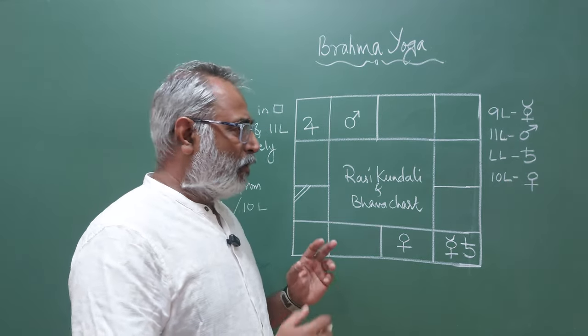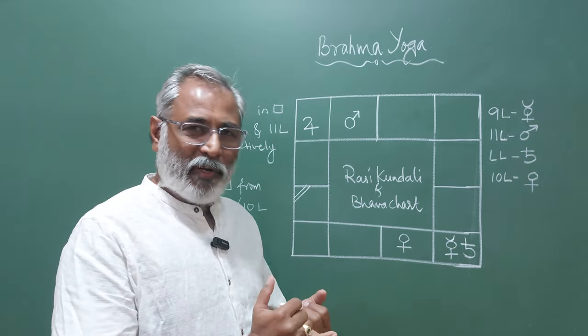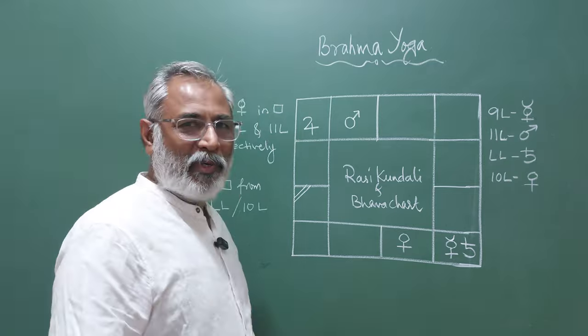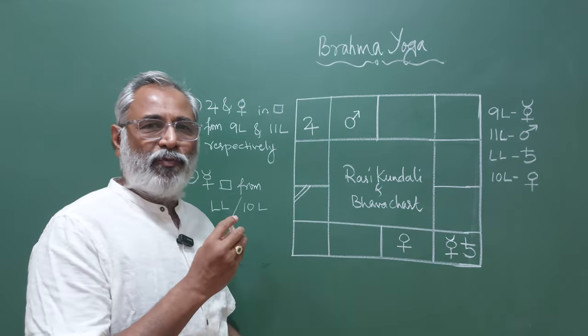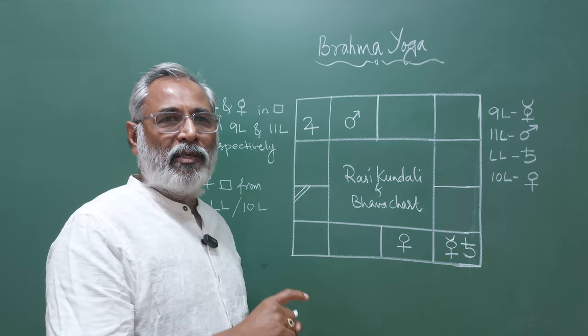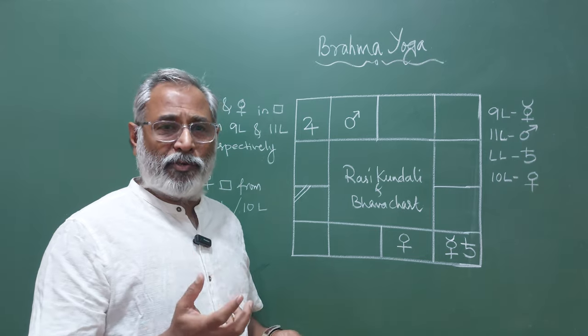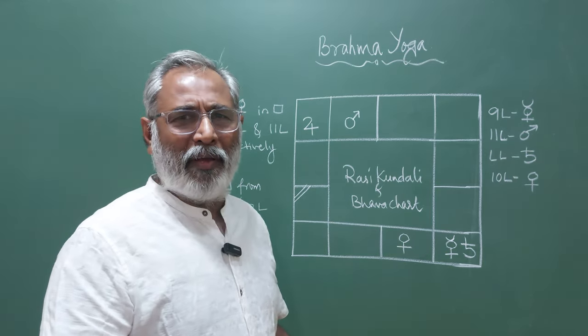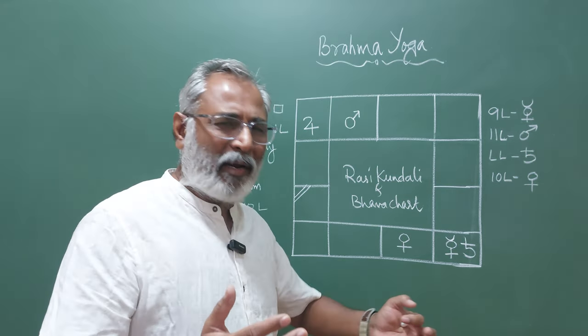The planets involved are Jupiter, Venus, Mercury, all Saumya Grahas. Saumya means soft planets and all these three planets have a craving for education, qualification, high standard of living. They love to study. They love to acquire a lot of knowledge.